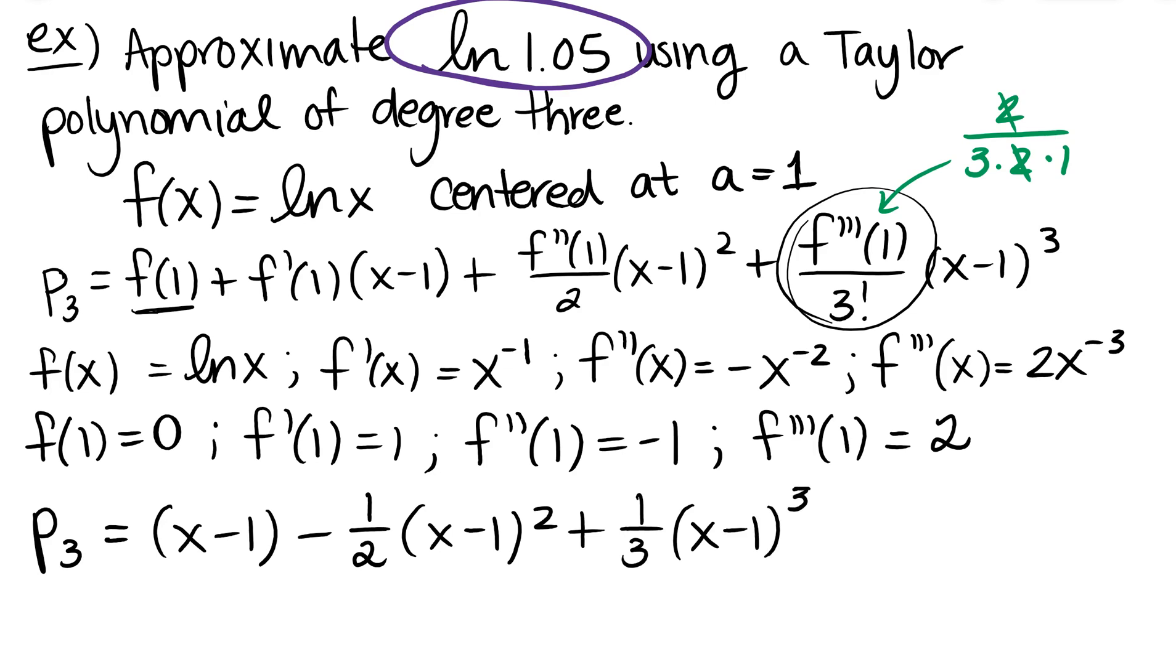I wonder if we did the fourth one, if it would be 1 fourth, probably. I don't know. It could be. Who knows? I don't know. I think it is. That's really neat. I think I remember. I should know this. The Taylor series for natural log is pretty interesting. So all right. So there's my Taylor polynomial of degree 3. I want to estimate the natural log of 1.05.